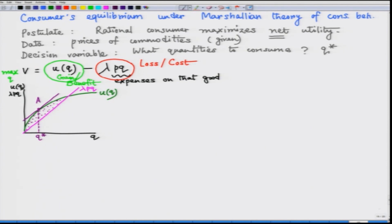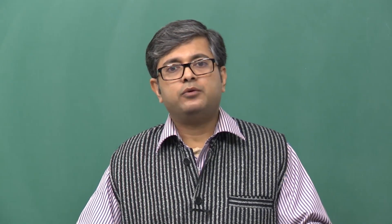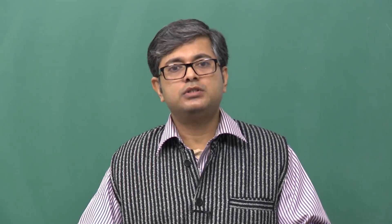We can represent the consumer's equilibrium A in a different manner as well. These alternative graphical representations. In the upper panel we have already plotted total utility function and we have seen the consumer's equilibrium denoted by the consumption level Q star.